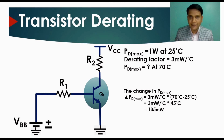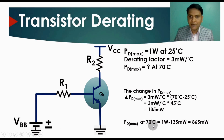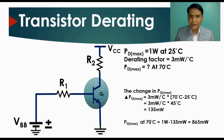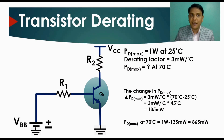The maximum power dissipation at 70°C is calculated as: PD_max(70°C) = PD_max(25°C) − ΔPD = 1 watt − 135 milliwatts = 865 milliwatts. This means if your transistor is operating at 70°C, it can dissipate a maximum of 865 milliwatts. This is an important limitation to consider in your circuit design.